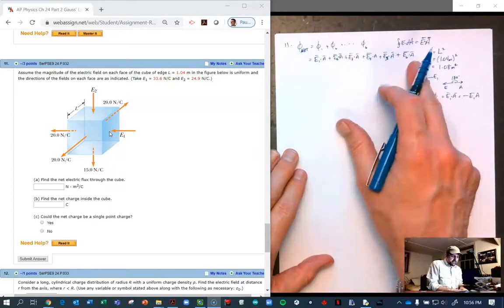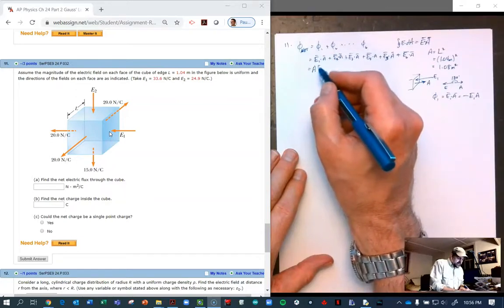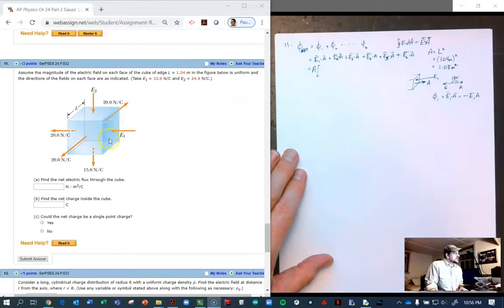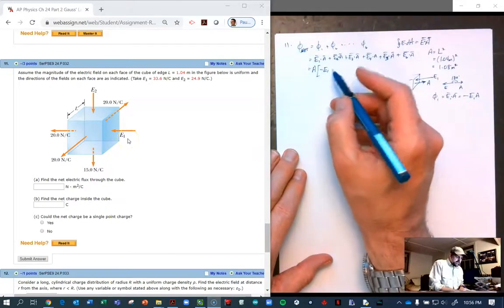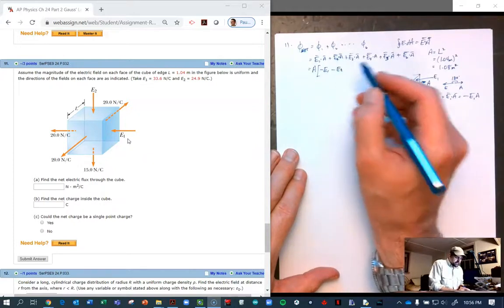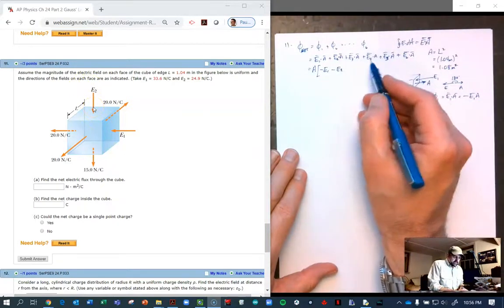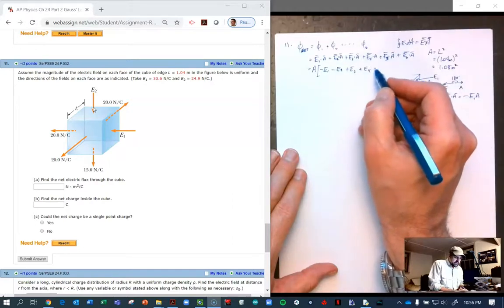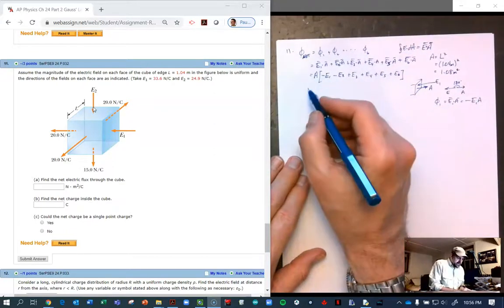The A's are the same in all of them. I'm going to pull out my A's. I'm going to skip a step here. This E1 dot A is going to be negative because it's going in and the area is pointing out. So this is going to be minus E1. E2 is also going to be minus because it's going in to the board. But then all of the rest, E3, 4, 5, and 6 are all pointing outwards.